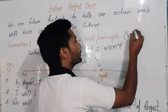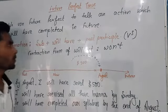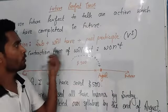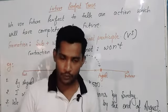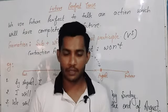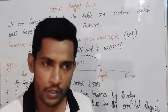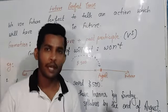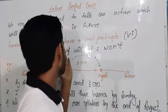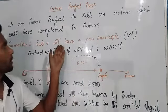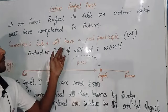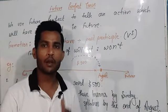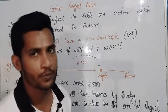Past participle means V3. Why have we used 'will have' and not only 'will'? We have used 'will have' because in perfect tense we use 'have' forms. In past we use 'had', and in future after modals, as you were told earlier, we use 'will have'. After all 'have' forms, only V3 or past participle is used.